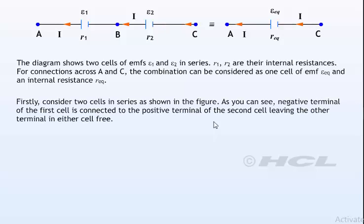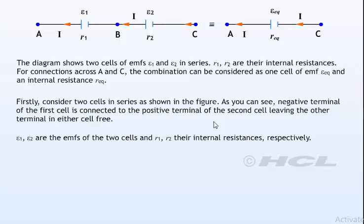Consider first two cells in series as shown in the figure, where one terminal of the two cells is joined together, leaving the other terminal in either cell free. E1, E2 are the EMFs of the two cells and R1, R2 their internal resistances respectively. Let V of A, V of B, V of C be the potentials at points A, B, and C shown here.